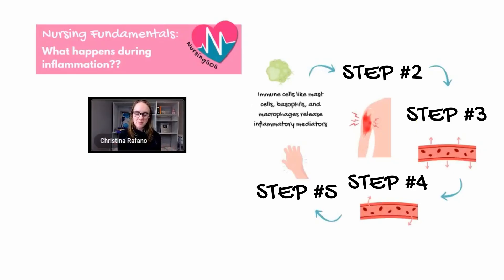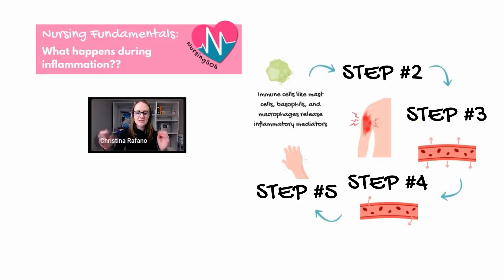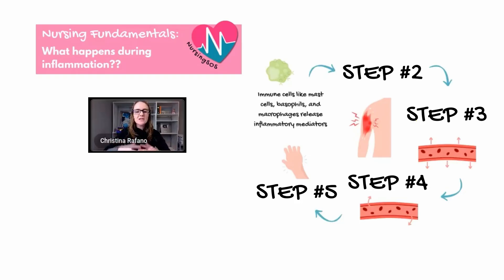The first thing that happens during this process is that immune cells — things like mast cells, basophils, and macrophages — release what we call inflammatory mediators. Those are things that are going to cause changes in the body tissues, blood vessels, and blood to increase inflammation and ultimately help the body to heal. When you hear the term 'inflammatory mediators,' don't worry — these chemical-type things go into body tissues and cause those healing changes.